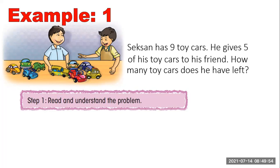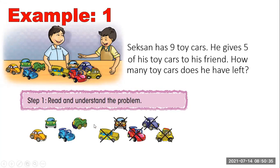In the picture, Gixon has nine toy cars and he gives five of his toy cars to his friend. The question is: how many toy cars does he have left? Step number one is to read and understand the problem — Gixon has nine toy cars and gives five to his friend.